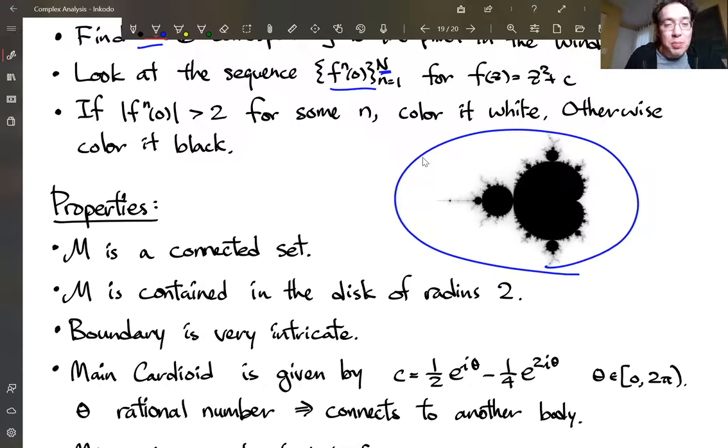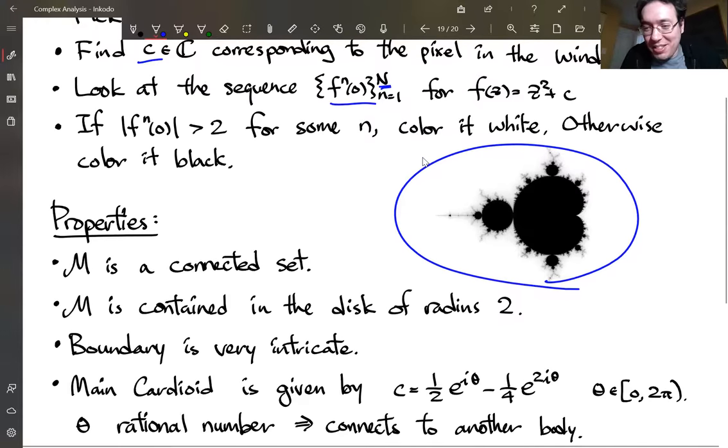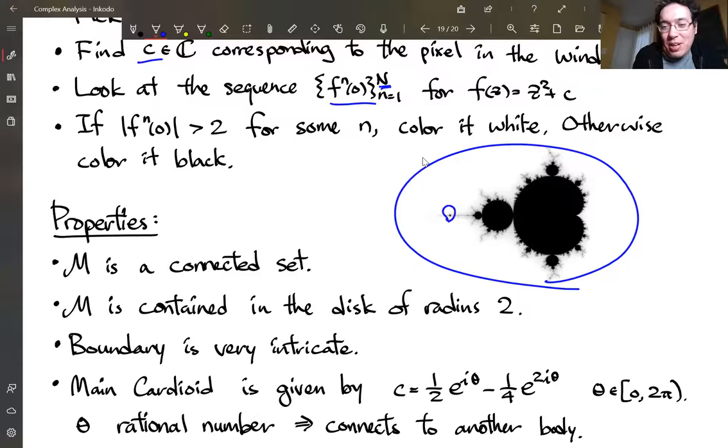So properties. Mandelbrot set itself is connected. So Mandelbrot got this wrong. The person who studied this originally made some plots using computers that weren't as good at the time. And with their resolution, it looked like some pixels appeared out of nowhere. So he actually conjectured that it was not connected. But it was proved eventually that it's a connected set. So everything in the Mandelbrot set is connected by something to itself.